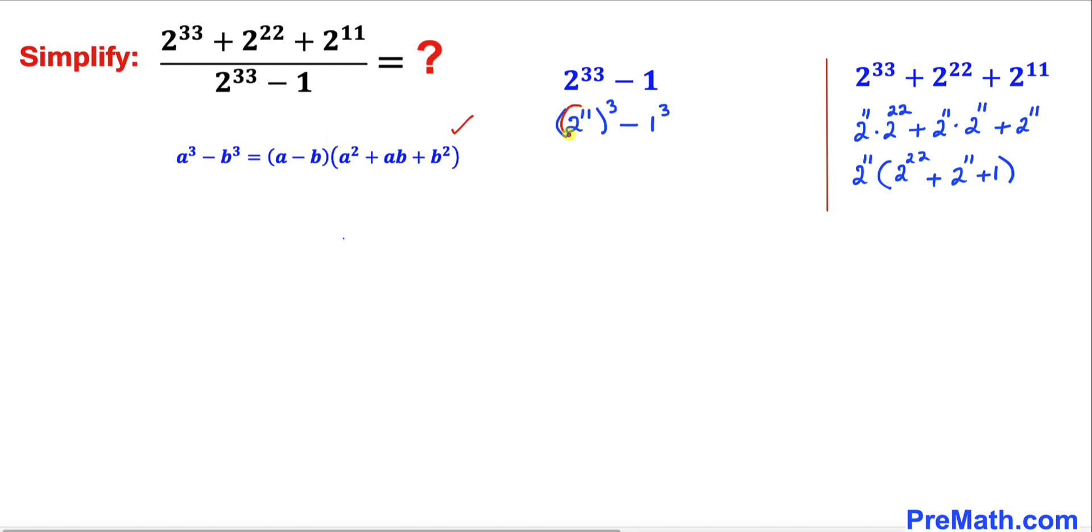If we call this part as an a and this one as a b, then this binomial could be factored out into 2 power 11 minus 1, times we can write this thing as 2 power 11 whole squared plus 2 power 11 times 1 plus 1 squared. So this is same as writing 2 power 11 minus 1...